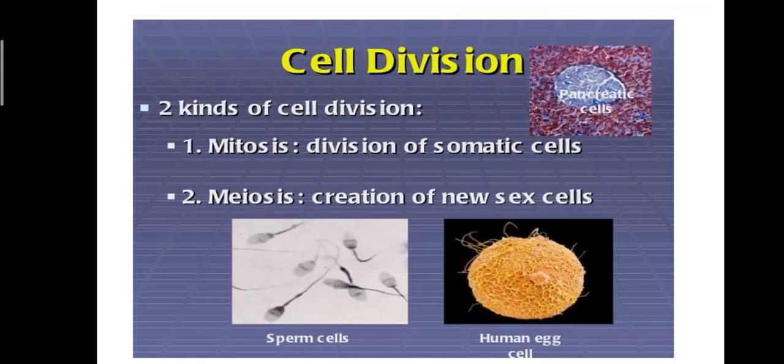Two kinds of cell division takes place. First one is mitosis. It occurs in somatic cells. And meiosis. Due to meiosis, creation of new sex cells.